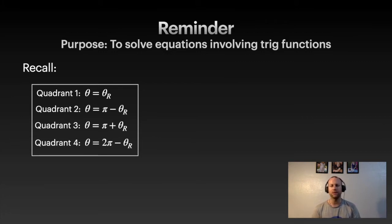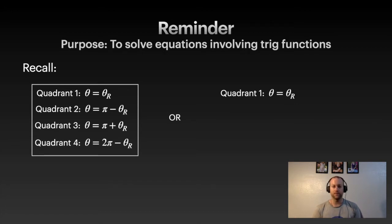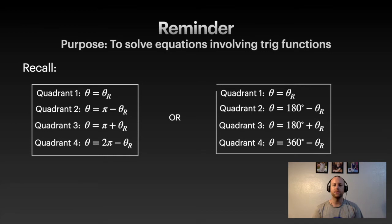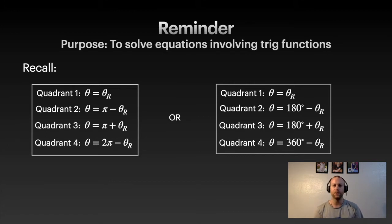These are the same equations just rearranged in terms of theta rather than the reference angle. We could also write these in degrees: instead of pi we use 180 degrees, and instead of 2pi it's 360 degrees. Depending on whether you're given radians or degrees, and which quadrant you're in, you need to know the correct equation. These are very important — you will use them a lot.